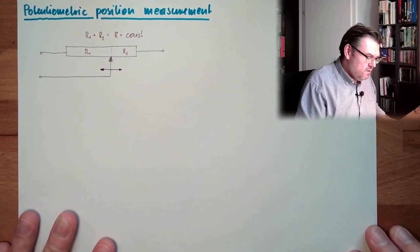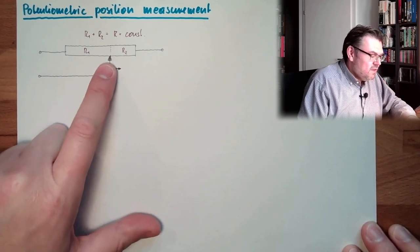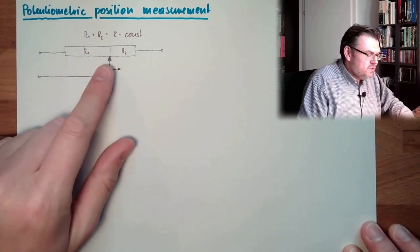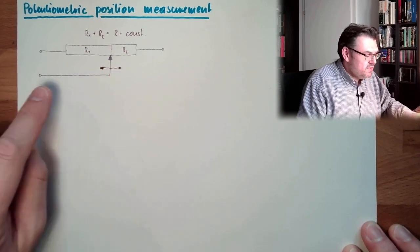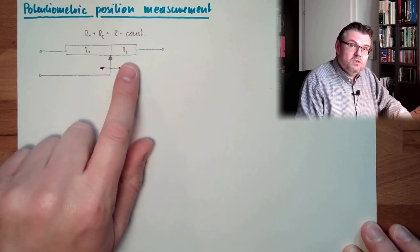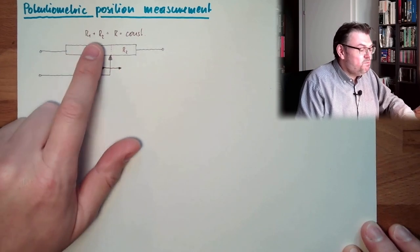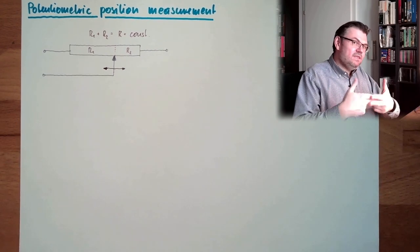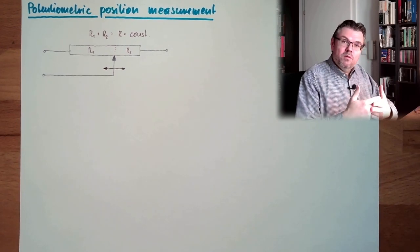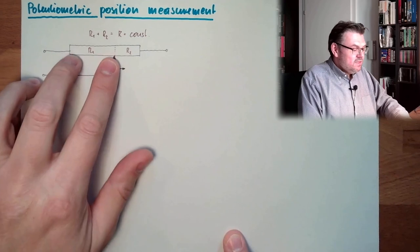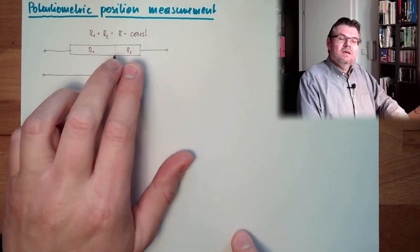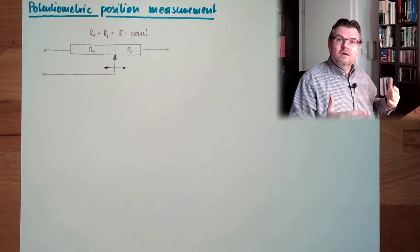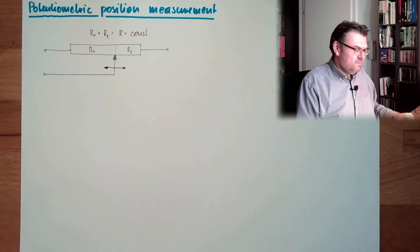So if I measure the resistance between here and here, I can measure the position of this slider. If I measure the resistance between here and here, I can measure the position of this slider. And since both are working exactly in the opposite way, it's like I could use a differential approach and measure this resistance and this resistance, make the difference. And I have double sensitivity.